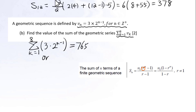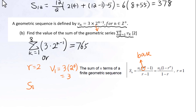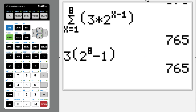The common ratio r is the base. 2 is the base for this exponential function, so r equals 2. And v sub 1 equals 3 times 2 to the power of 1 minus 1, which is 2 to the 0 power, equals 3. Therefore, S sub 8 equals 3 times (2 to the 8th power minus 1) over (2 minus 1), which equals 765.